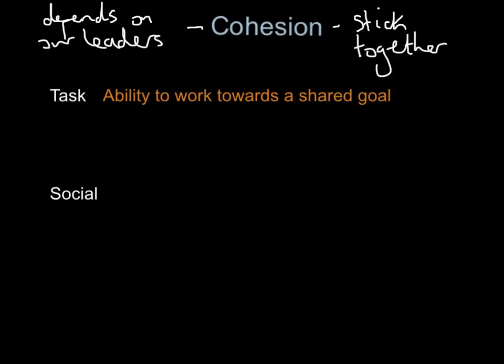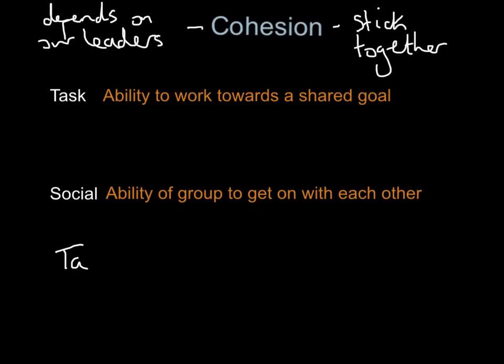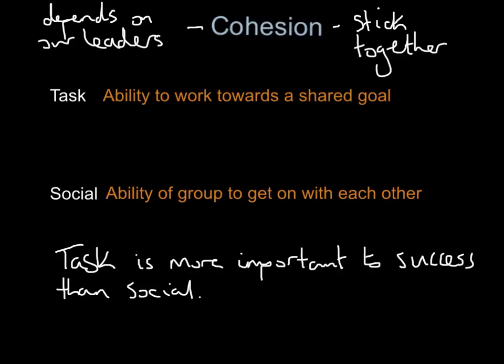Task cohesion is all about the task — how willing are we to work towards a shared goal? Has your team got a set goal, and how well is everyone pulling in the same direction? That is task cohesion. In contrast, social cohesion is the ability of the group to get on with each other — how well they get on socially. If you could only have one, you'd want task cohesion, which is more important to team success than social cohesion.